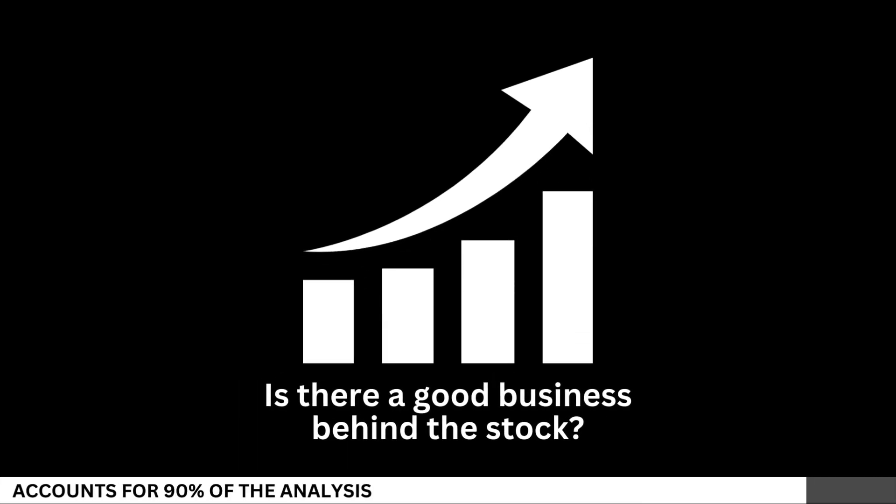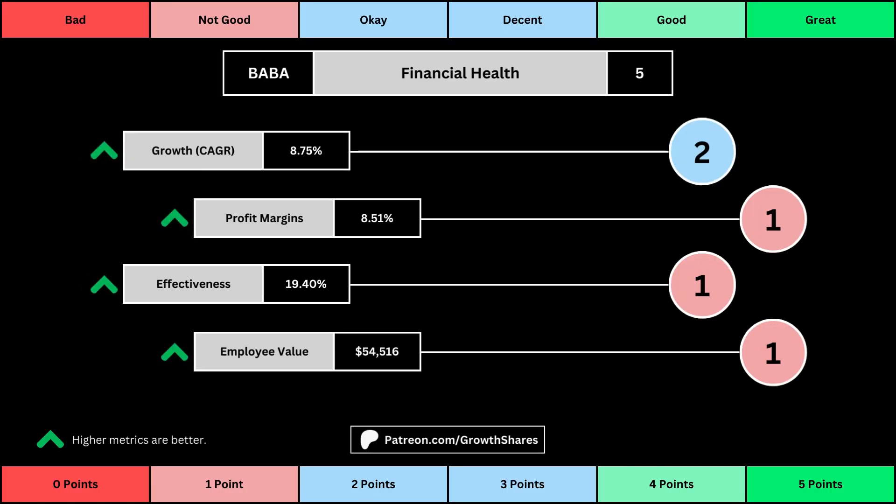We'll look at 14 metrics to determine the business fundamentals. The first set of metrics deal with the company's financial health, with its projected earnings growth for the next five years, its profit margins, its effectiveness — which looks at the company's returns on equity, assets, and invested capital — and then the employee value, which looks at how much value the average employee adds to the business. You can see the values for each of these metrics, as well as the point totals awarded in the bubbles.